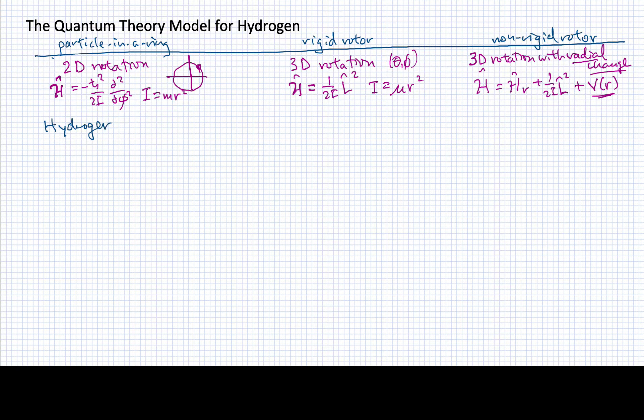If we write down the hydrogen atom Schrödinger equation, our Hamiltonian operator operates on a wave function that depends on r, theta, and phi.